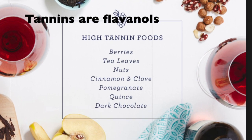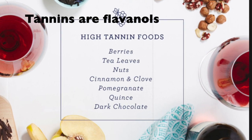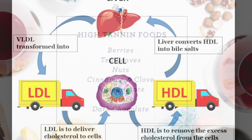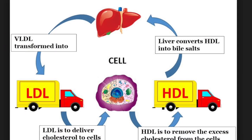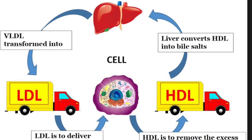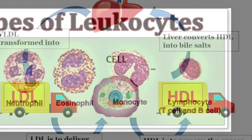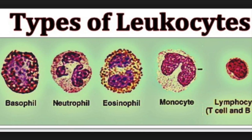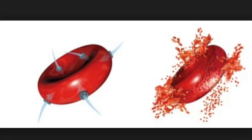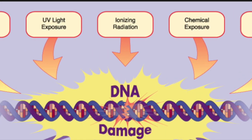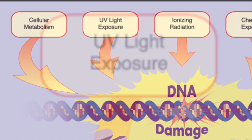Cacao and purified cacao flavonols and procyanidins have been reported to attenuate the copper-mediated and endothelial cell-mediated oxidation of LDL, to reduce the production of reactive oxygen species by activated leukocytes, to protect against erythrocyte hemolysis, and to inhibit ultraviolet C-induced DNA oxidation.